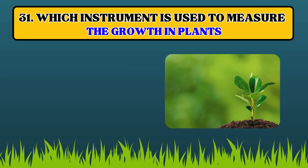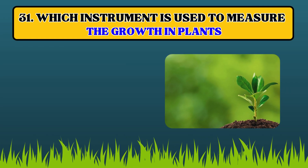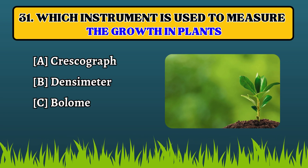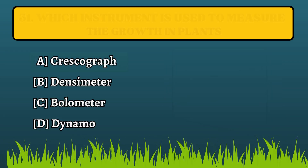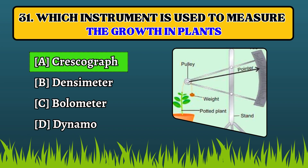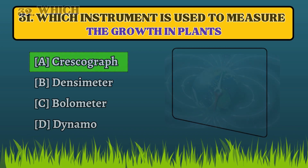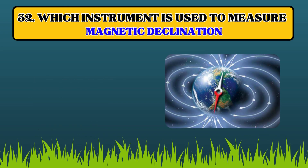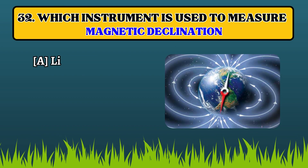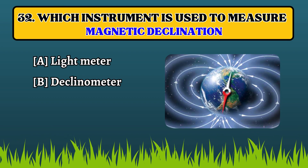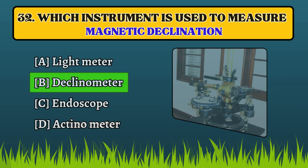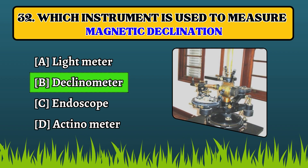Which instrument is used to measure the growth in plants? Crescograph. Which instrument is used to measure magnetic declination? Declinometer.